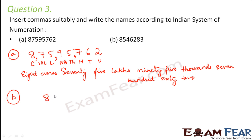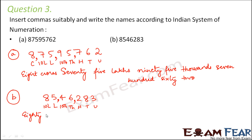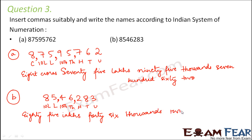Let's look at the second one: 8, 5, 4, 6, 2, 8, 3. Let's again position the digits — units, tens, hundreds, thousands, ten thousands, lakhs, ten lakhs. This is a smaller digit compared to the first one. Let's separate the lakhs and the thousands — and that's how we have placed the commas. So this would be 85 lakhs, 46 thousands, 283. This is how we can name numerals; no matter how big they are, if we are able to position the digits correctly we will be able to do it appropriately.